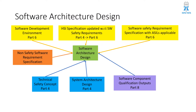In general, software architecture design represents all software components and their respective interactions in a hierarchical order or representation. Static aspects such as interfaces and data paths between software components need to be considered. Also, dynamic aspects such as process sequences and timing behavior should also be considered.